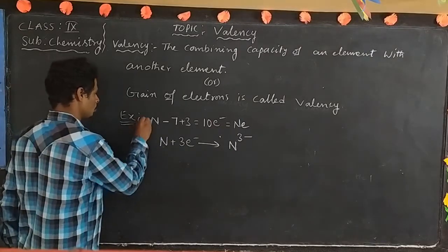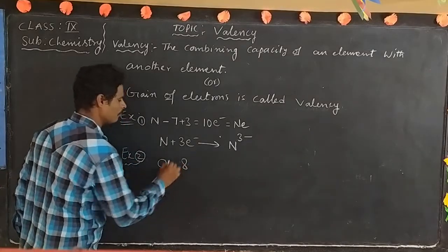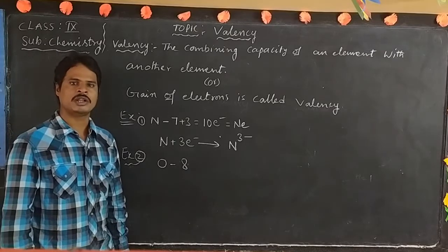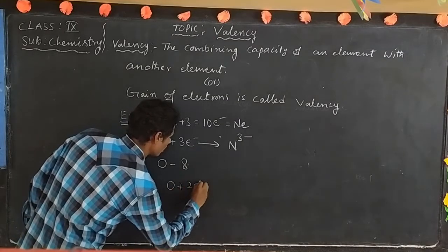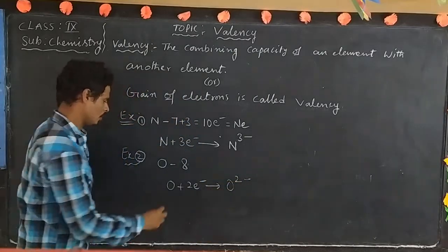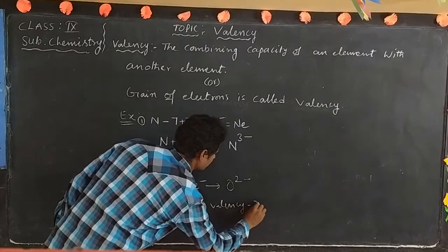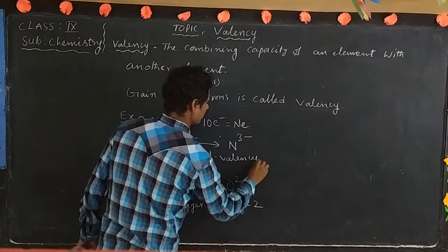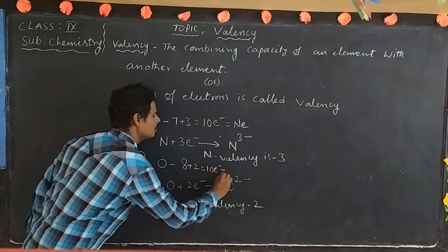Example two: oxygen, atomic number 8. Oxygen needs to reach neon's electronic configuration. How many electrons are required? Two electrons. Oxygen gains 2 electrons to become O²⁻. So oxygen valency is 2. That gives 8 + 2 = 10 electrons, equal to neon.